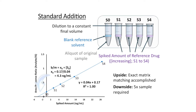In standard addition, equal aliquots of the starting sample are added to each of the calibration curve vials, followed by an increasing amount of the reference material, and then the samples are all diluted to a constant final volume.